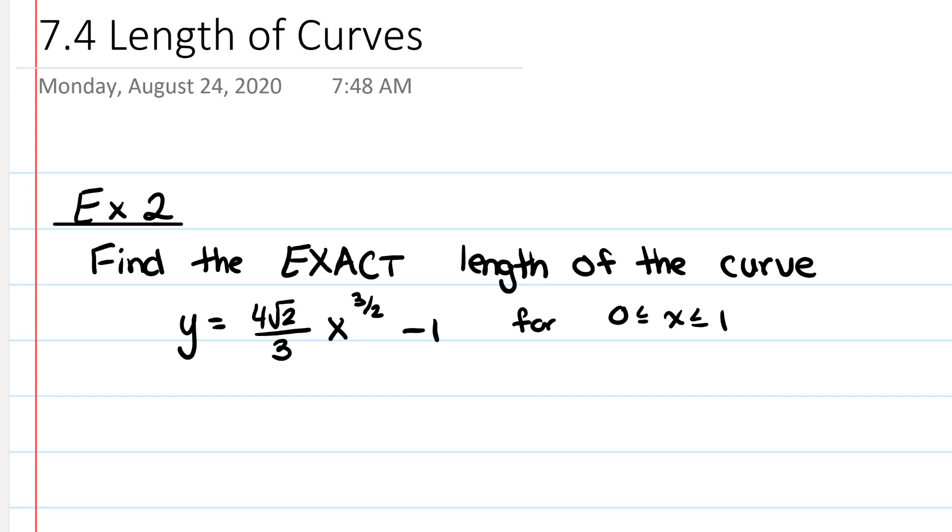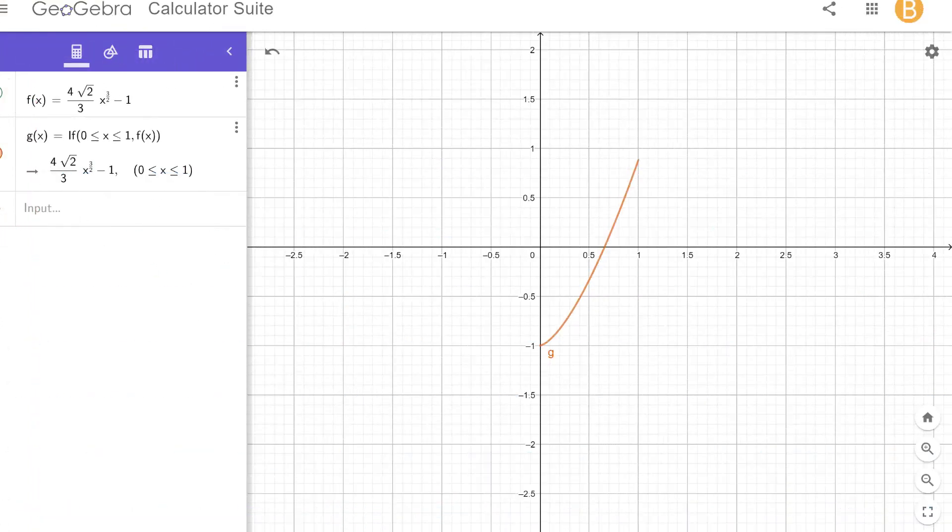So the first thing we need to do is look at what this graph looks like to make sure it doesn't have any corners, cusps, or breaks in the graph, because if it does we can't take the derivative which we're going to need for our formula. So we look at the graph here, looks nice and smooth between 0 and 1 so we're all set.